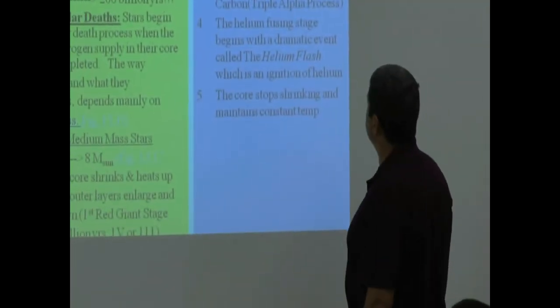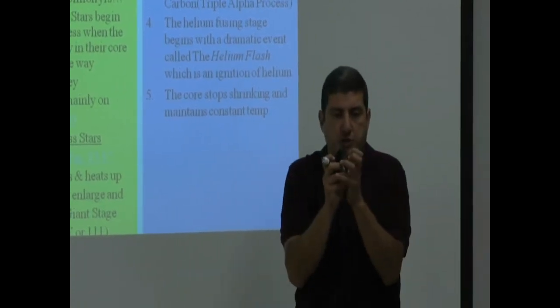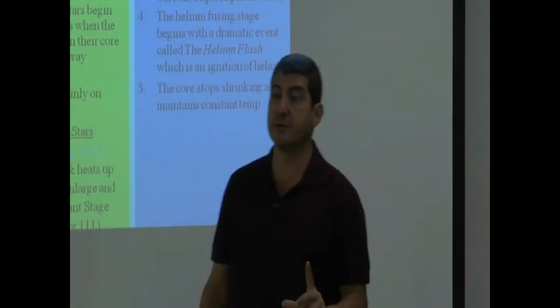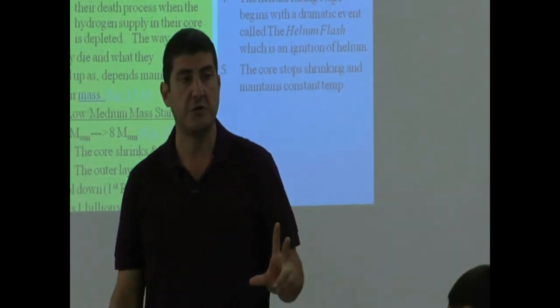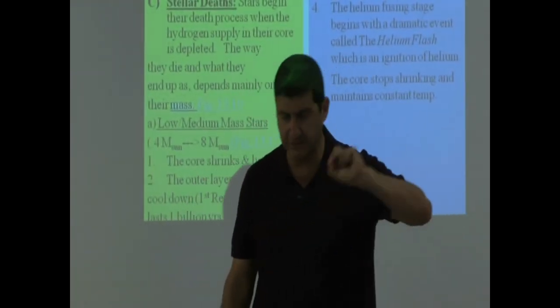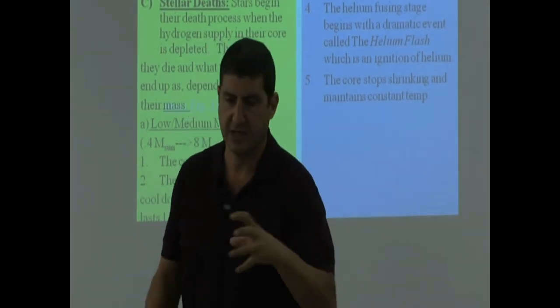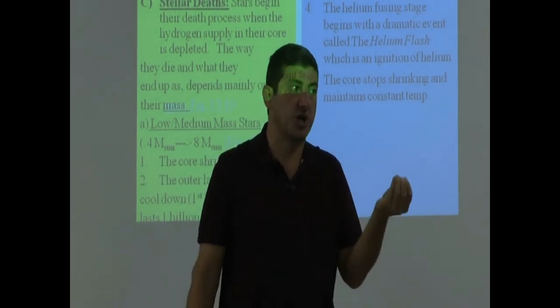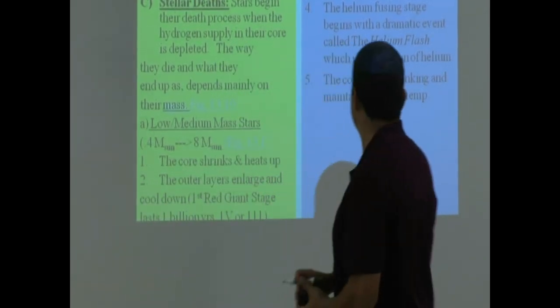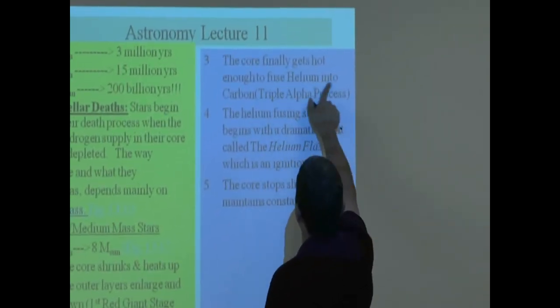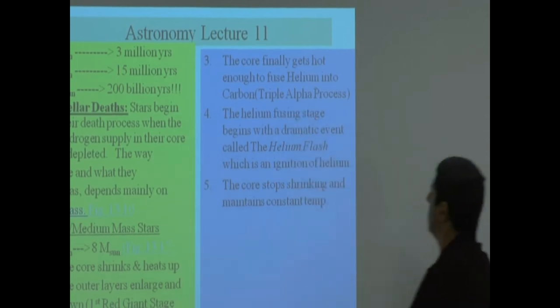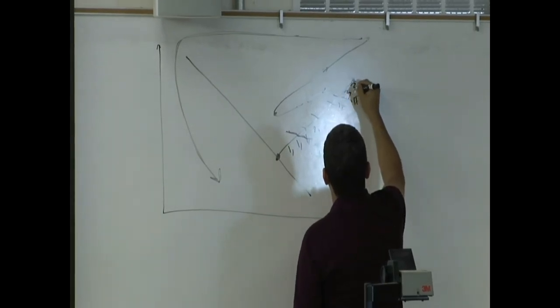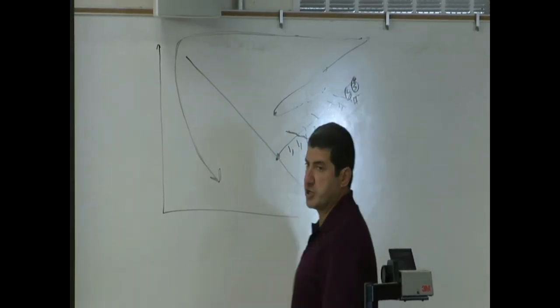The core finally gets hot enough. As the core is shrinking, the core is getting really hot. If it gets hot enough, it can do some other process that we learned about, the triple alpha process. If you go back to the lecture on the sun, that's when a star takes helium, fuses it together, and forms carbon and makes energy out of that. The core finally gets hot enough to fuse helium into carbon, known as the triple alpha process. So three takes place somewhere around here, just before the corner.